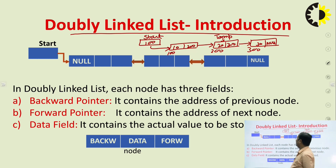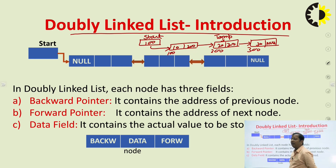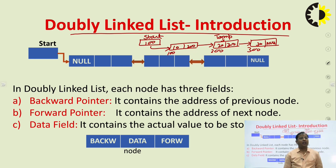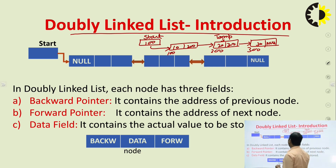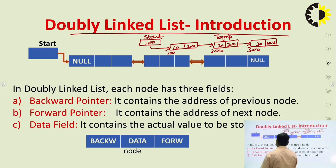To improve the accessing, we can use the doubly linked list. As the name suggests — doubly linked list — it is a collection of nodes where each node has at least three parts. The single linked list has at least two parts, so the doubly linked list has at least three parts.